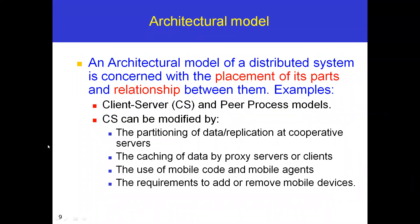The next model is the architectural model. An architectural model of a distributed system is concerned with the placement of its parts and the relationships between them. 'Placement of parts' means the placement of nodes — how nodes are distributed. This architectural model is concerned with the placement of nodes and the relationship between them.